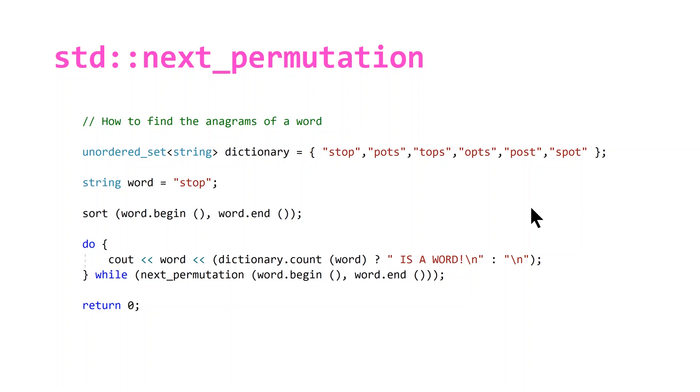The way we can find all our words is by sorting our source word and then by calling a short do-while loop, using the next_permutation function in the while condition.